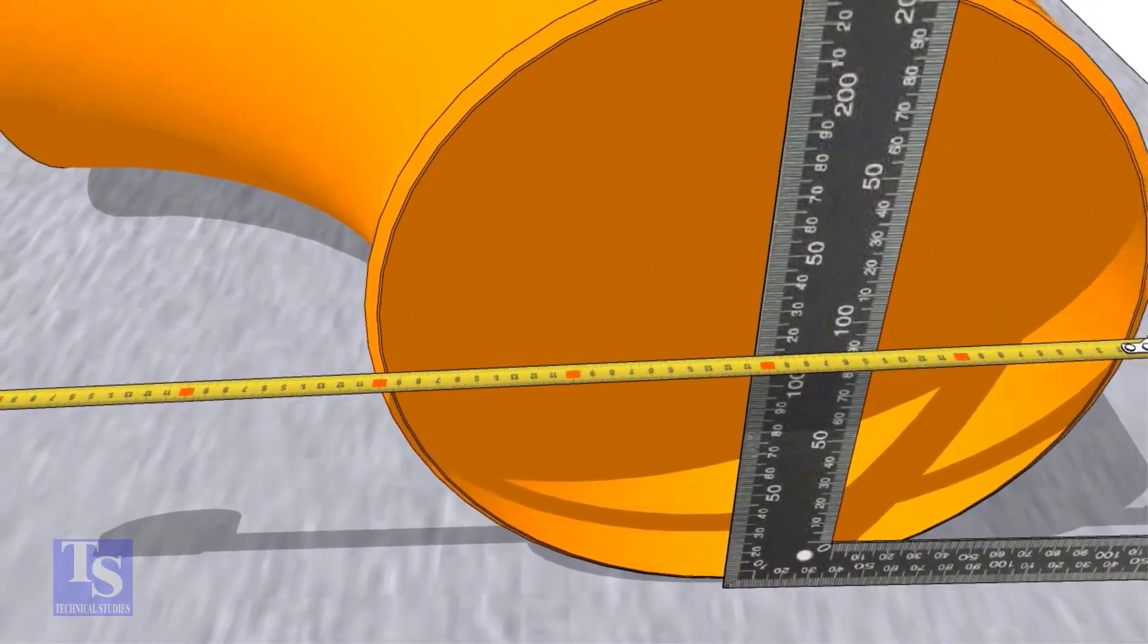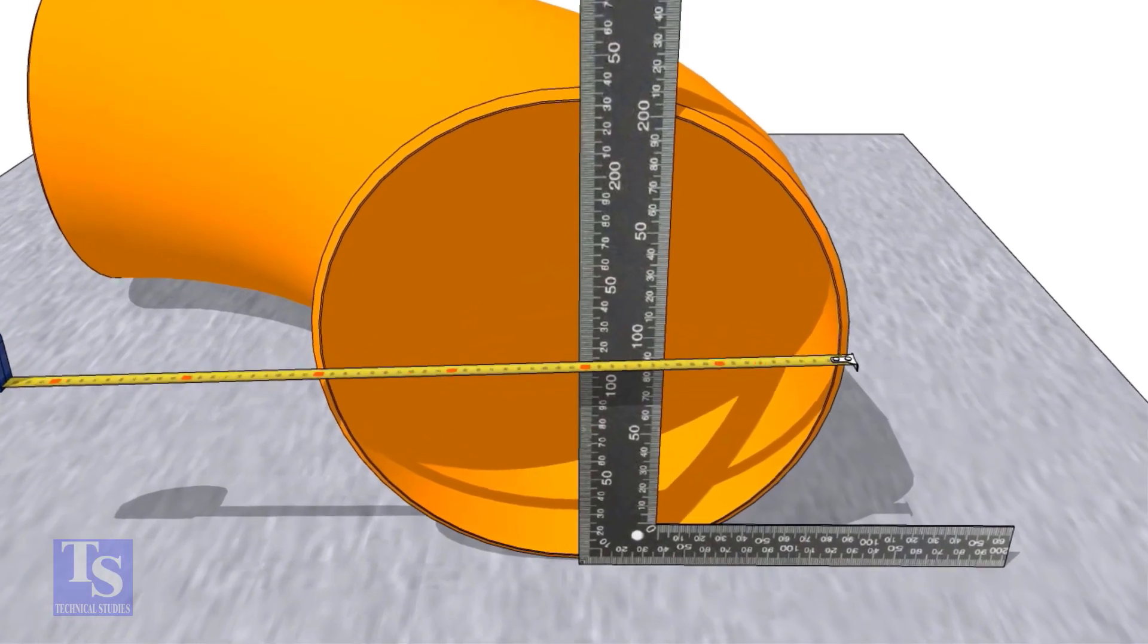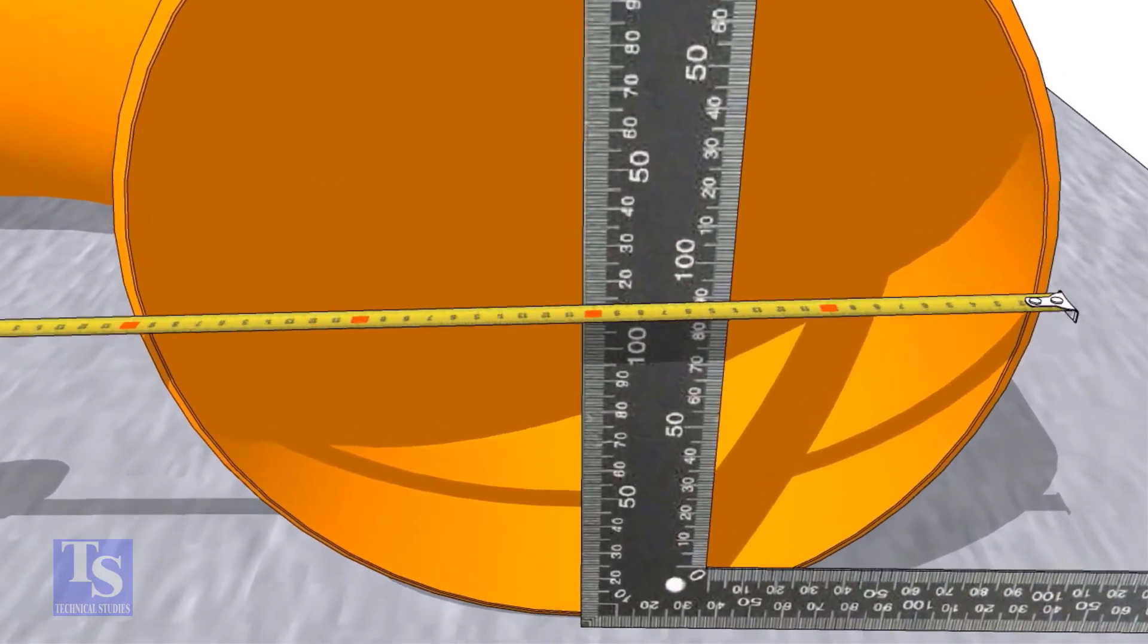Put a right angle at the center of the elbow. Make sure the distance from the edge of the elbow to the face of the right angle is equal.